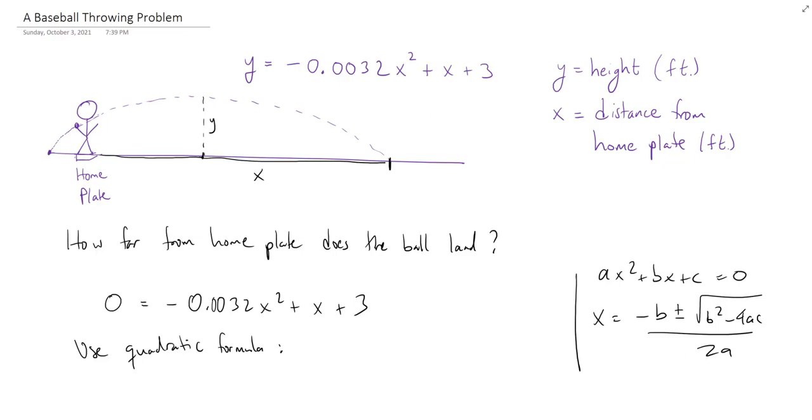All right, OK. So let's run this through then. So x is going to equal... Let's see. So our b here is 1. That's the coefficient in front of the x. So we're going to copy down minus 1, plus or minus the square root of 1 squared, which is 1, minus 4 times...